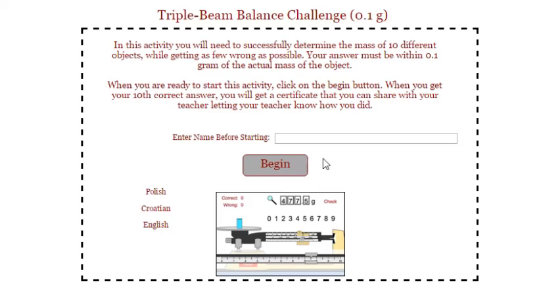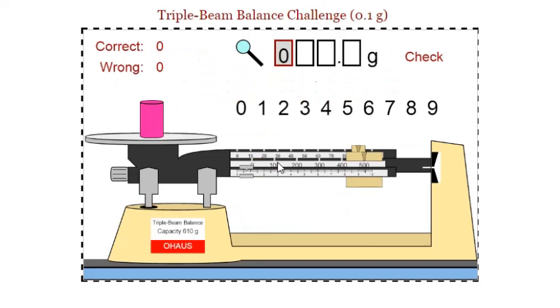You can enter your name if you want, you don't actually have to unless you really want to have a certificate at the end. But here's how a triple beam balance works.